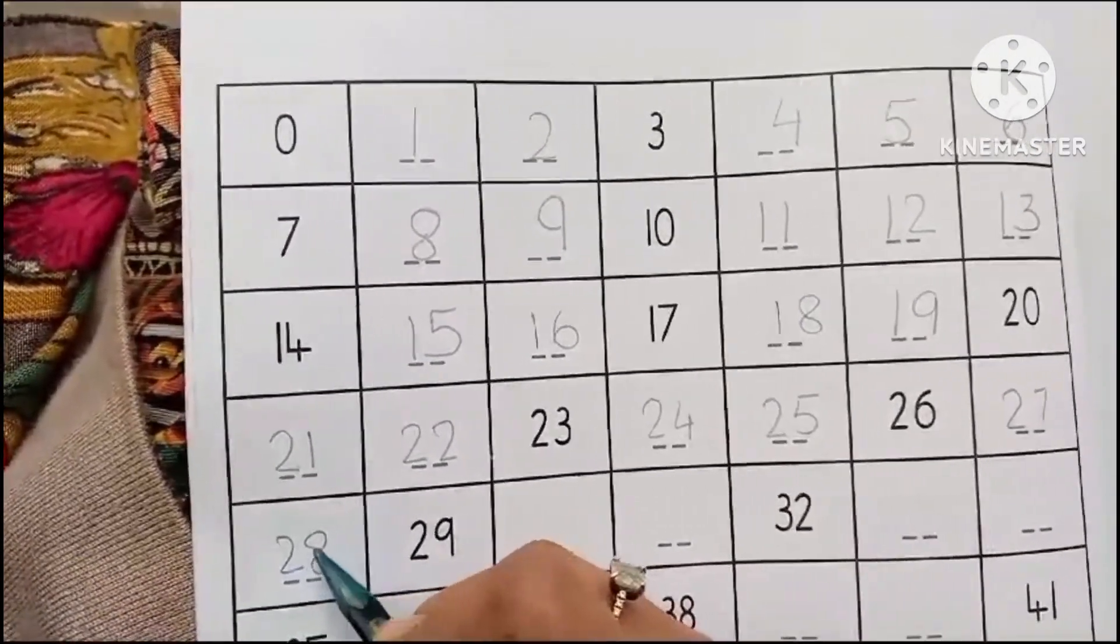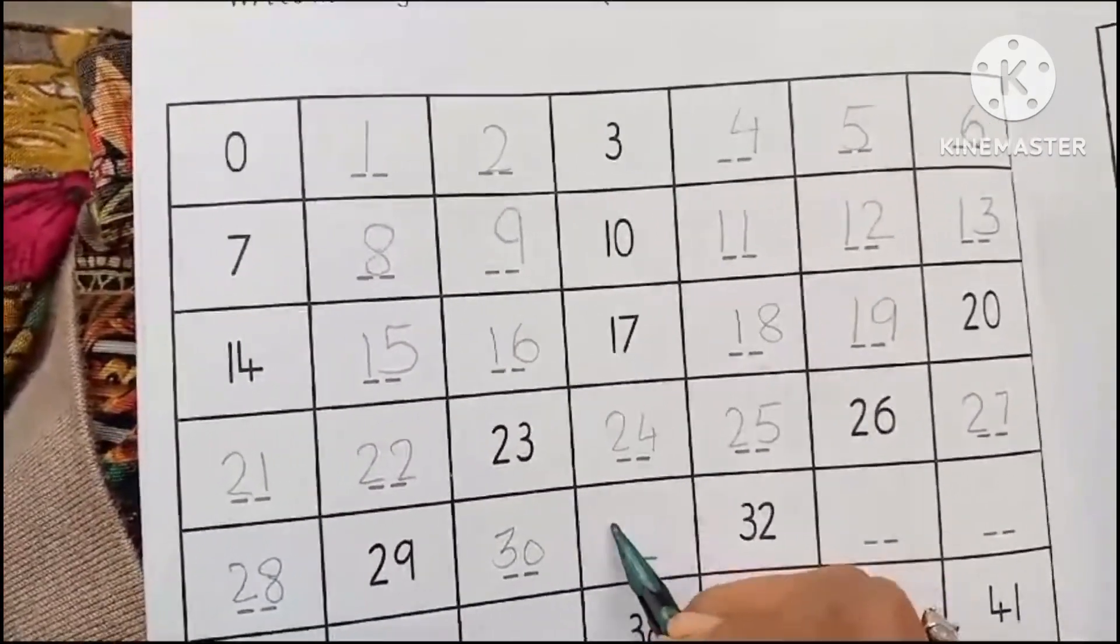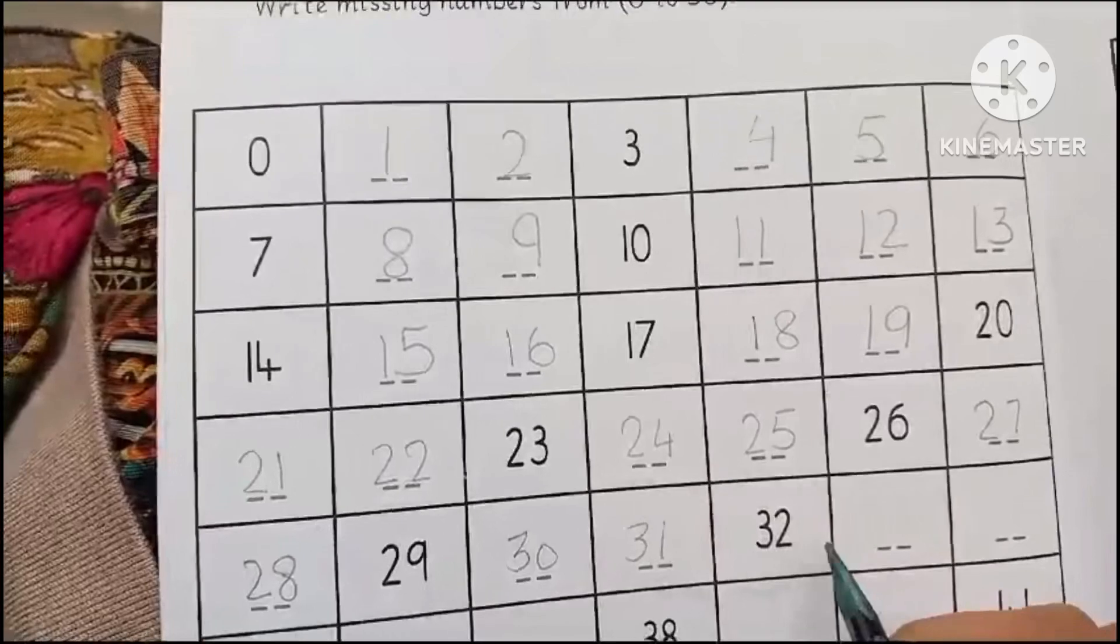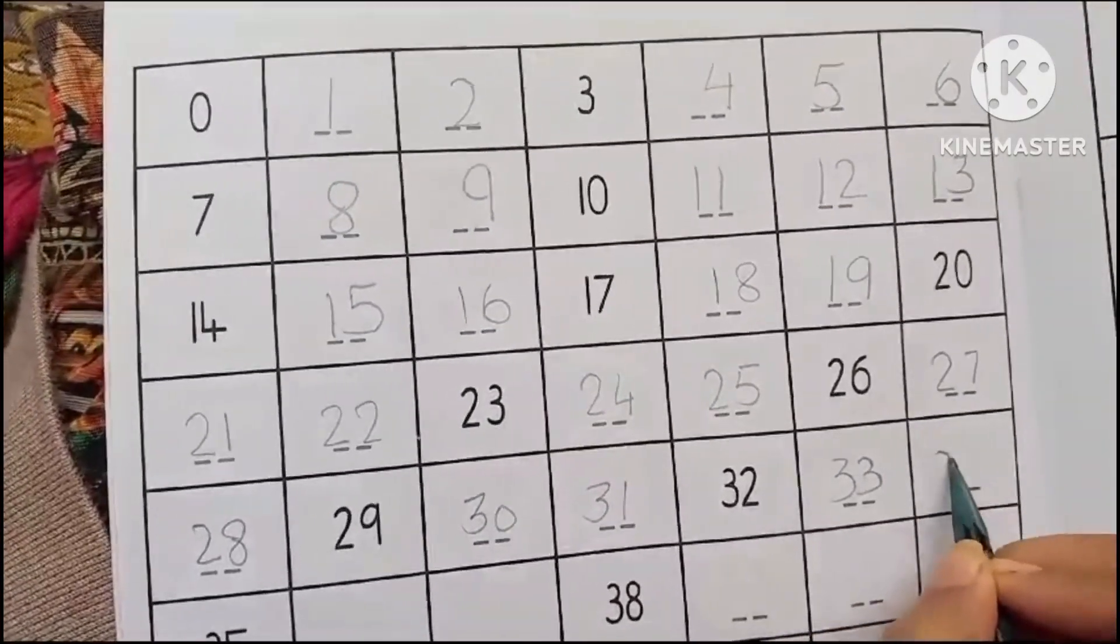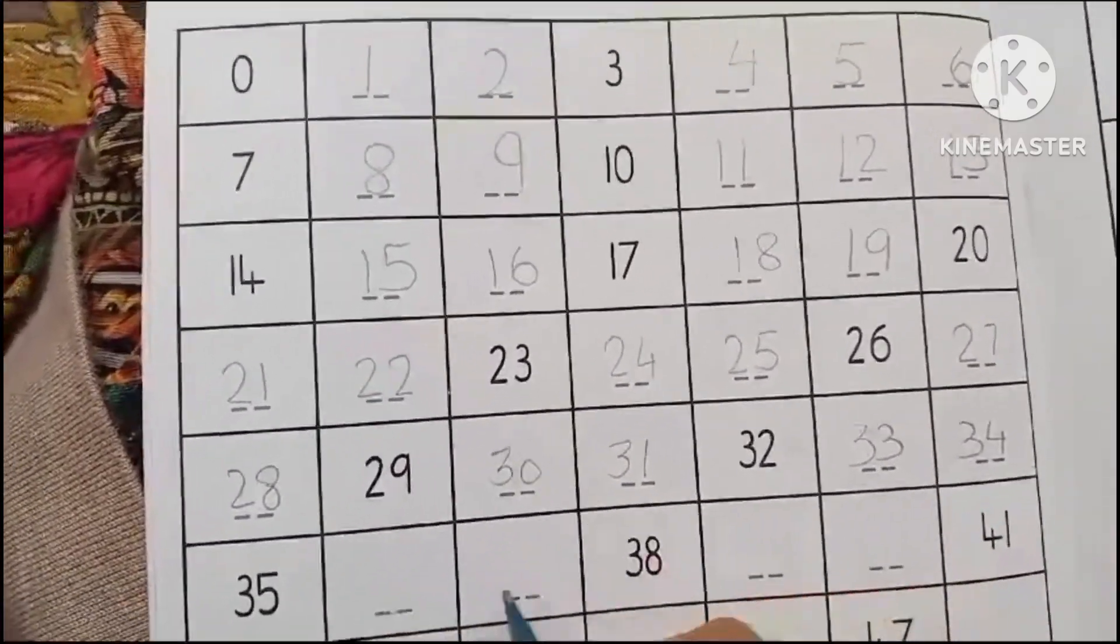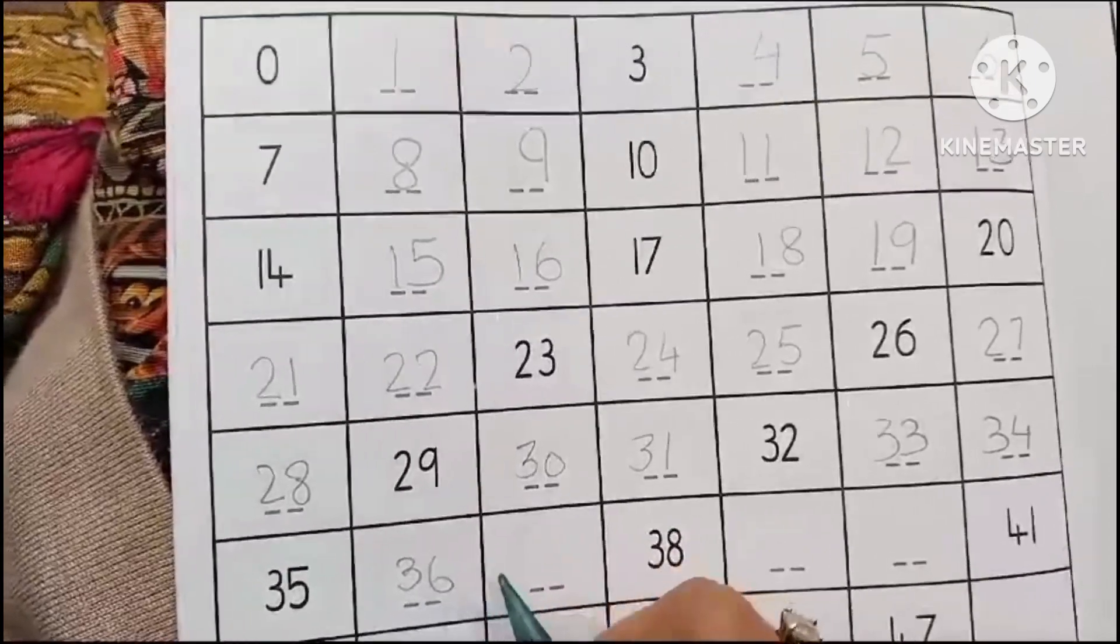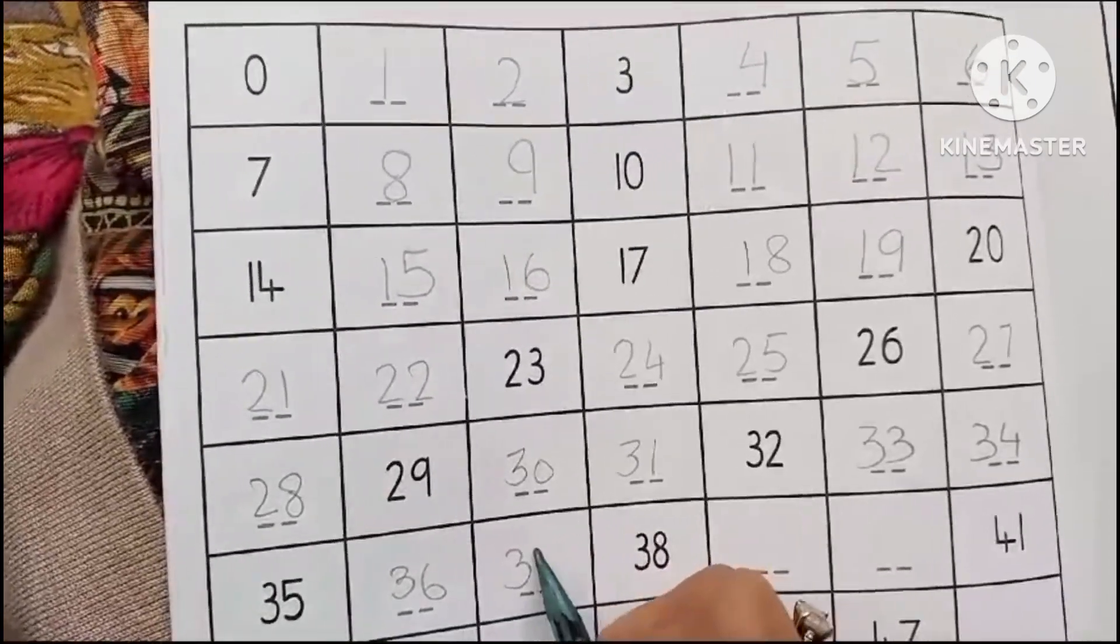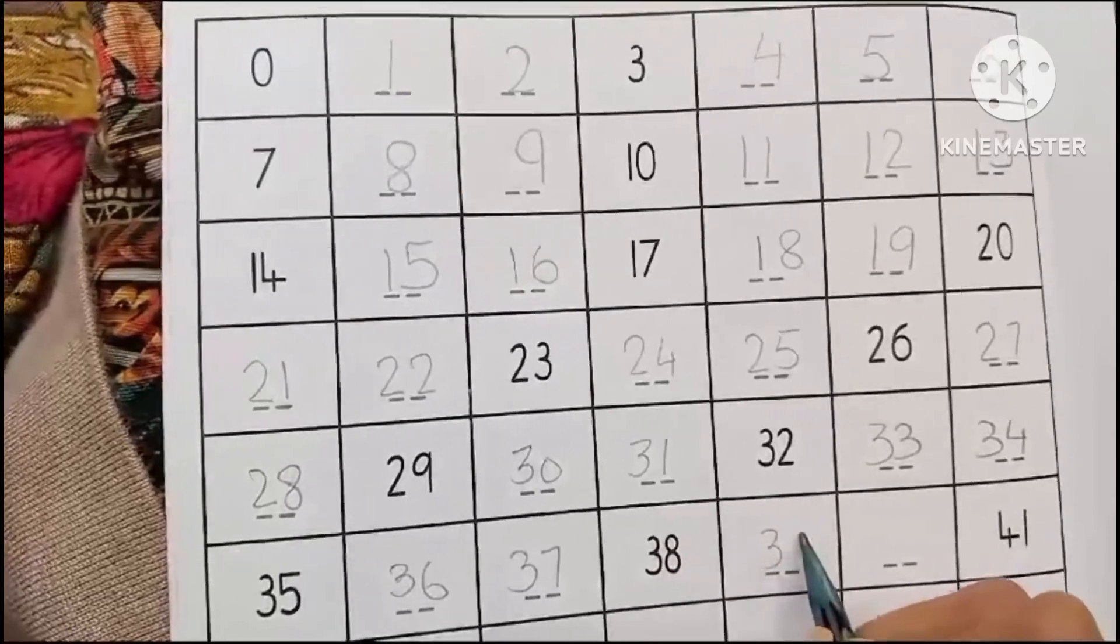Twenty-eight, twenty-nine, thirty, thirty-one, thirty-two, thirty-three, thirty-four, thirty-five, thirty-six, thirty-seven, thirty-eight, thirty-nine.